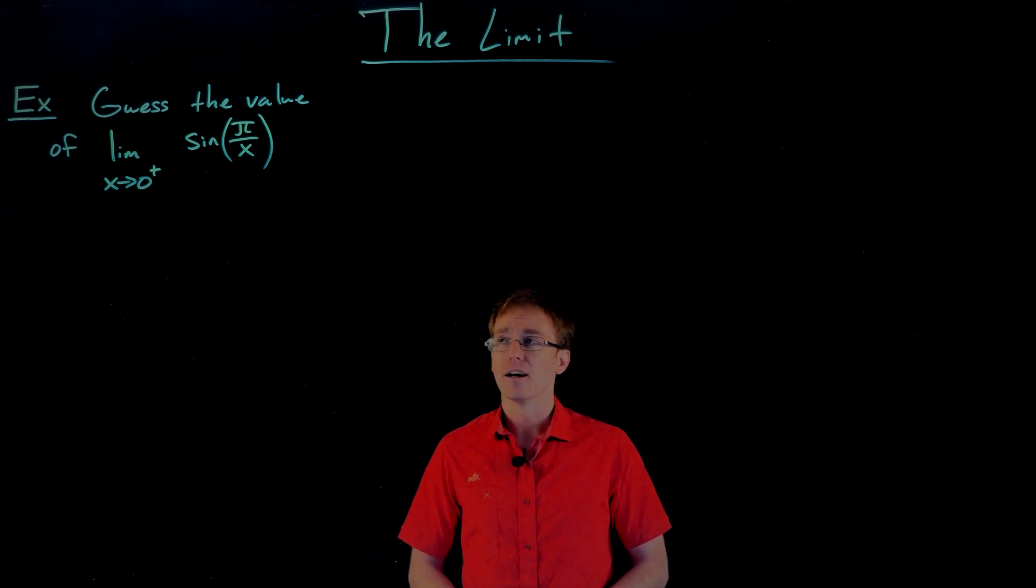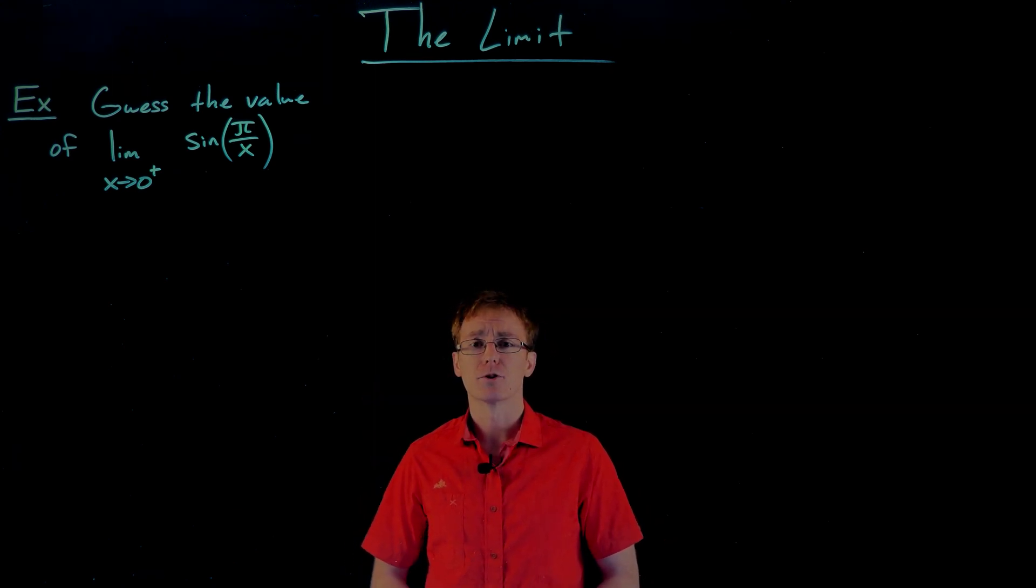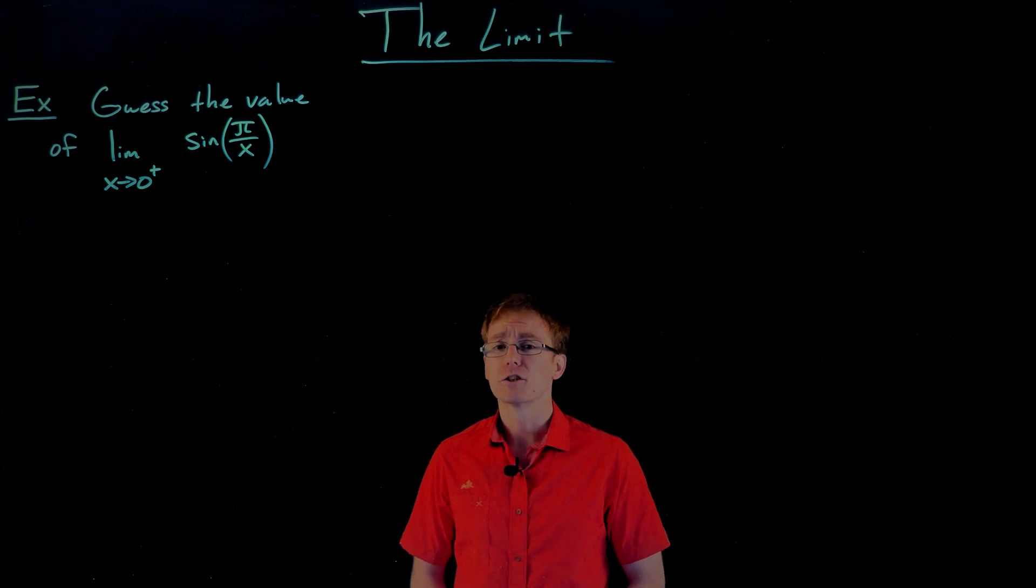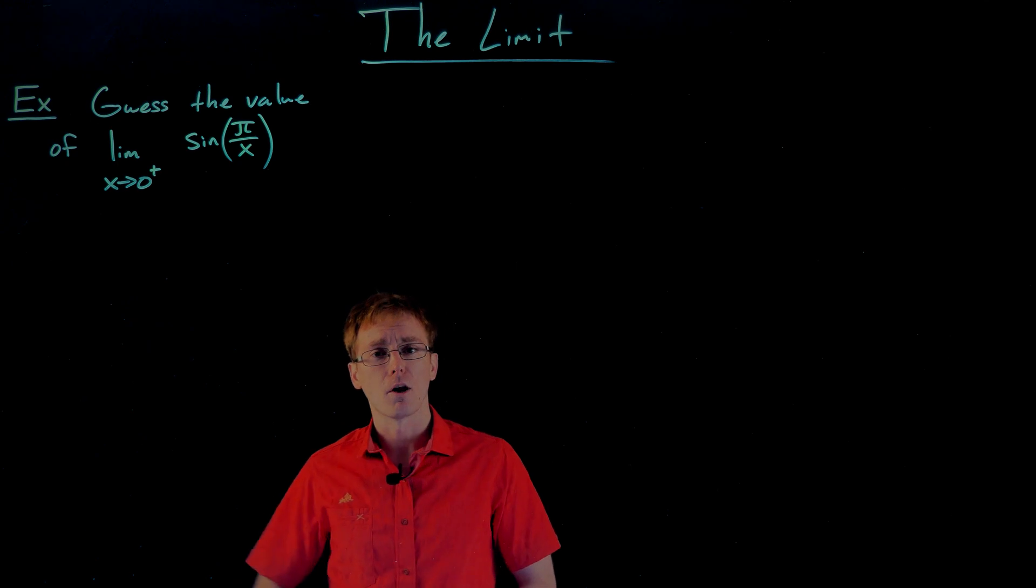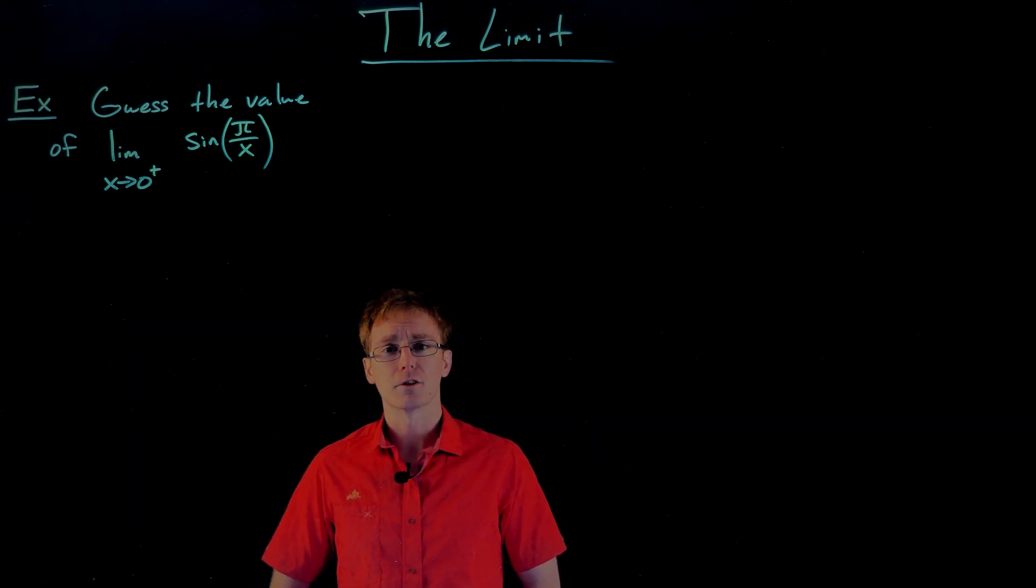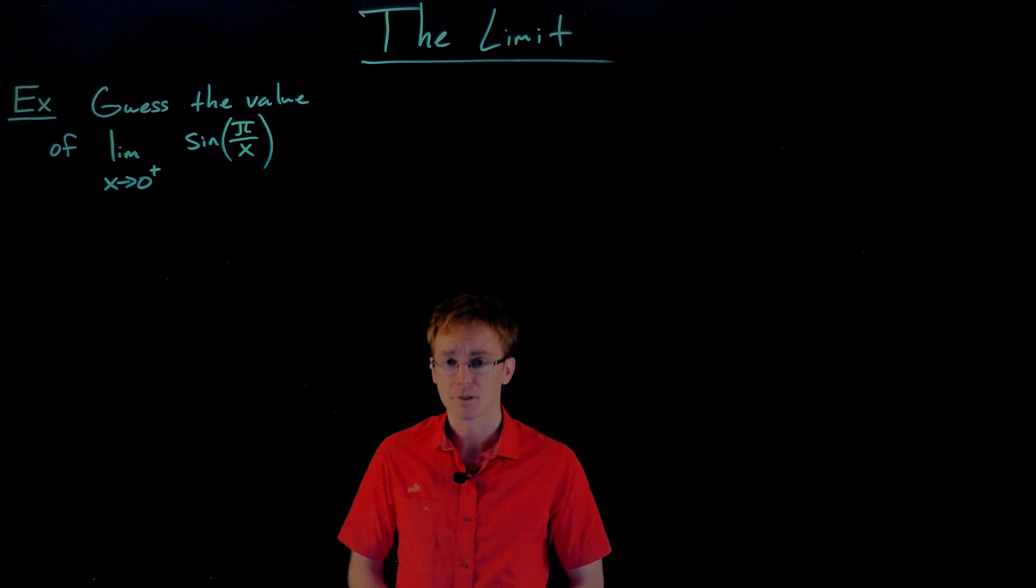We're going to see in this example, things are going to go wrong. So in this example, we want to guess the value of the limit as x approaches zero from the right of the function sine of pi over x. So to do this using the approach we've been using so far, we need to select a sequence of x values that is getting closer and closer to zero, while always being on the right hand side of zero, plug those x values into our function sine of pi over x and see what the output is doing. So let's go ahead and start creating our table of values.